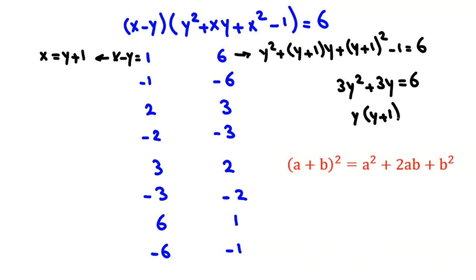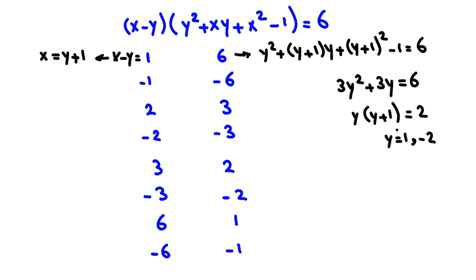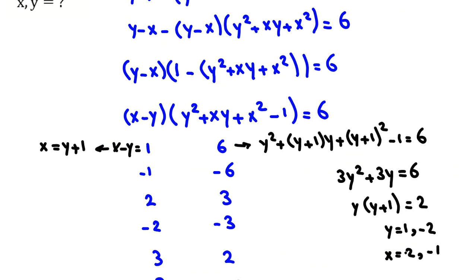Factoring: y(y + 2) = 0... actually solving gives y equals 1 if y is positive, or y equals negative 2 if y is negative. Since x equals y plus 1, x equals 2 when y equals 1, and x equals negative 1 when y equals negative 2.